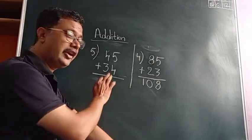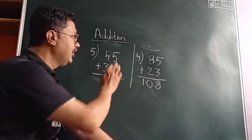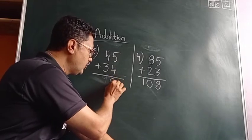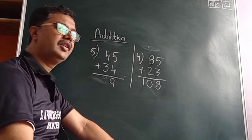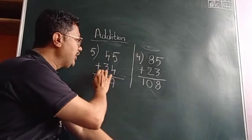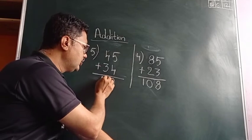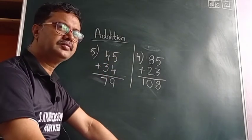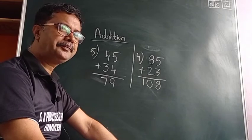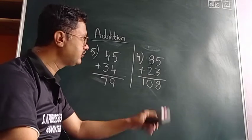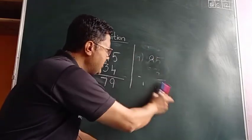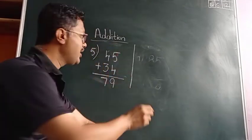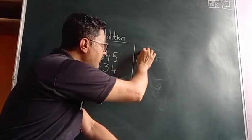Very good children! Five plus four is equal to nine, and four plus three is equal to seven. Now for the next example, I will give you the numbers and you have to solve them.